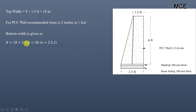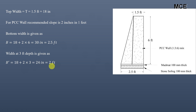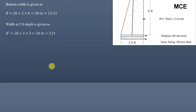The slope is 2 inches per foot and the wall height is 6 feet, so the triangular base = 2 × 6 = 12 inches. Therefore the bottom width = 18 + 2 × 6 = 30 inches or 2.5 feet, as shown in the figure. Similarly, the width at 3 feet depth from the top = 18 + 2 × 3 = 24 inches or 2 feet. That covers the PCC wall in both unit systems.